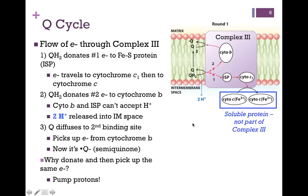So the question is, why did it donate an electron simply to pick it back up again later? What did we accomplish in the process? When QH2 becomes fully oxidized to Q, it also releases two protons into the intermembrane space. And that's going to contribute to our proton gradient.